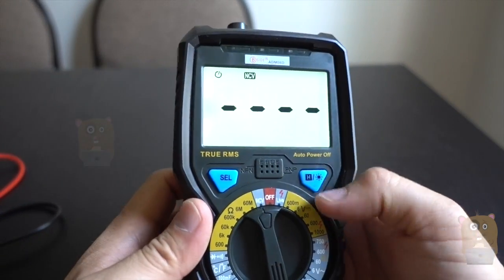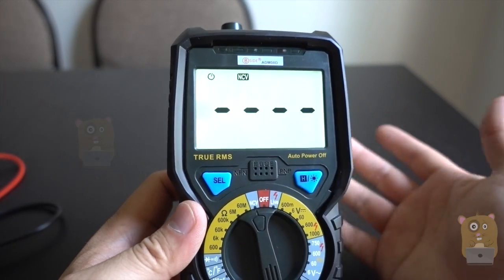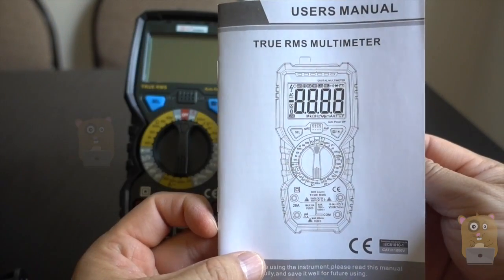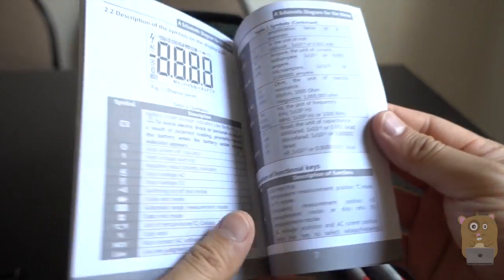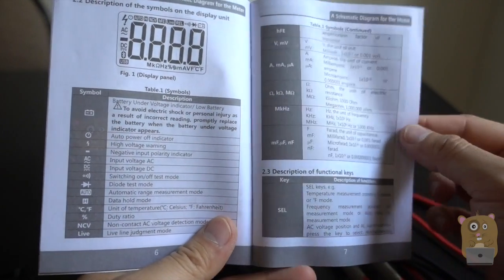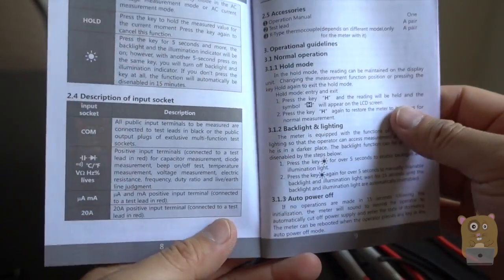Very handy. So now, the display over here is very easy to read. This true RMS multimeter also came with a very well-documented user manual. It's always good to take a look at this. You've got all the functionalities that's available for it.